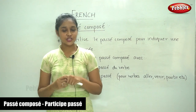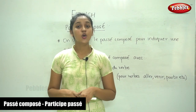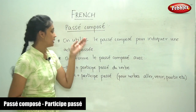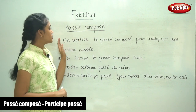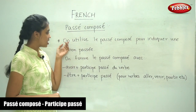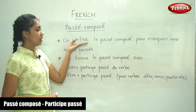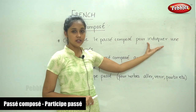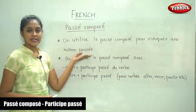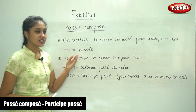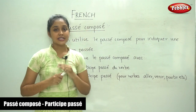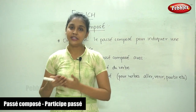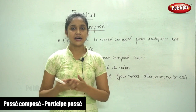Now that you are thorough with the conjugation in the present tense, we are going to learn a new tense today. It is le passé composé. Passé composé is the past tense. One uses le passé composé to indicate an action that has passed — that one action has already been done.